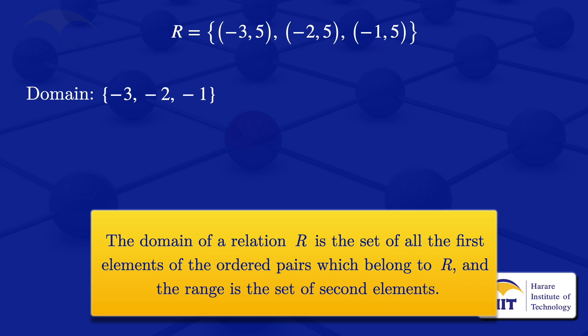Moving on to the range, we look at the second elements. The second element is 5, the second element is 5, and the second element is 5. So the range is the set of the second elements, and since they are all the same, the range is simply {5}.